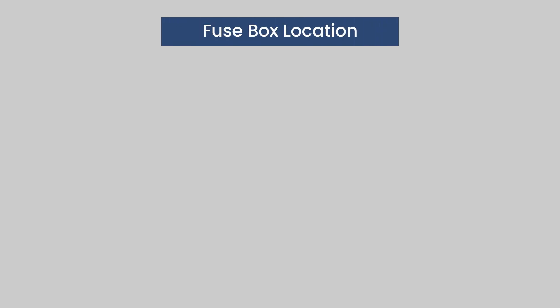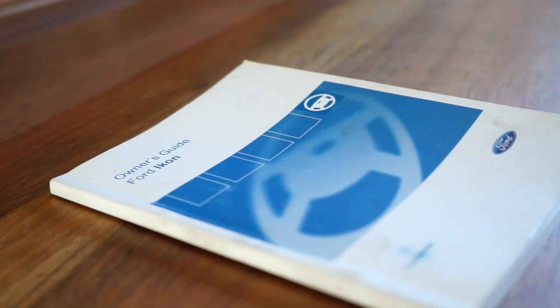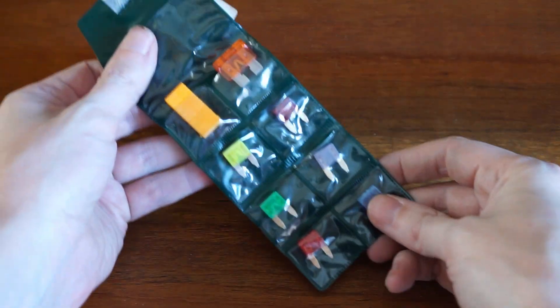The fuse box will be located in various places in the vehicle depending on the make and model, but is usually located under the dash or in the engine compartment. See your owner's manual for more information. You might need a pair of tweezers or long nose pliers to remove the blown fuse.